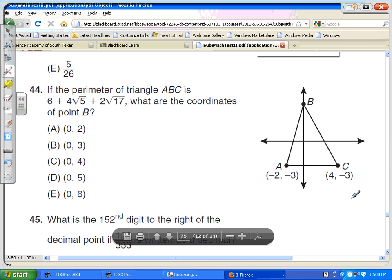Okay, number 44 on the SAT subject test level 1. We need to find the coordinates. It says, what are the coordinates of point B? Given the perimeter of the triangle is 6.